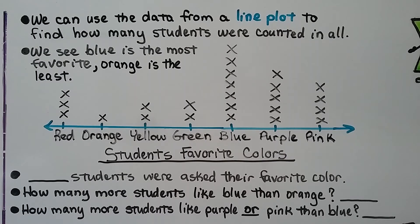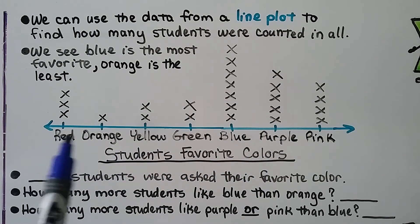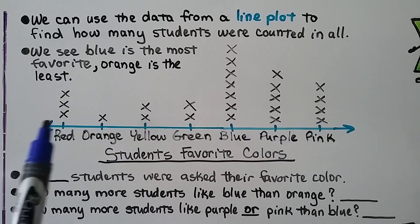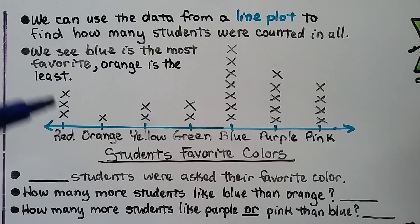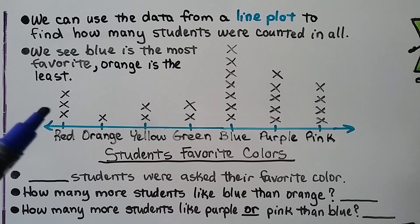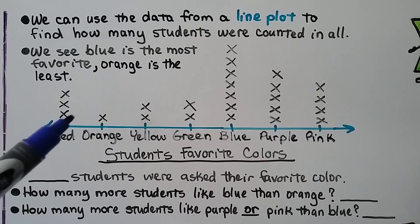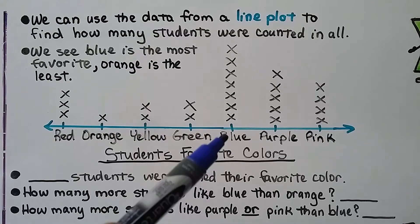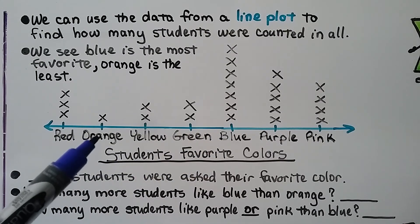We can use the data from a line plot to find how many students were counted in all. It shows students' favorite colors: red, orange, yellow, green, blue, purple, and pink. Students in a classroom answered, and they put an X for each student. If we want to know how many students were in the class, all we have to do is count up the X's. We can see that blue is the most favorite color and orange is the least favorite color.